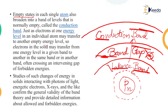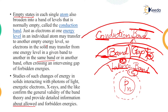Just as electrons at one energy level in an individual atom may transfer to another empty energy level, electrons in a solid may transfer from one energy level in a given band to another in the same band or in another band. If we give very little energy, the electron will transfer within the same band. But if we give more energy, it can transfer to the band gap or to the conduction band. Studies of such changes of energy in solids interacting with photons of light, energetic electrons, and x-rays confirm the general validity of the band theory and provide detailed information about allowed and forbidden energies.